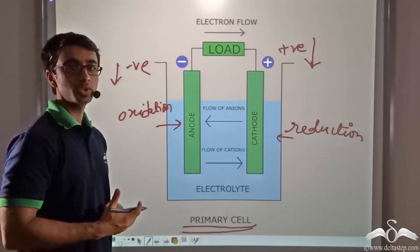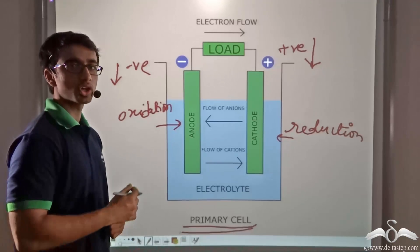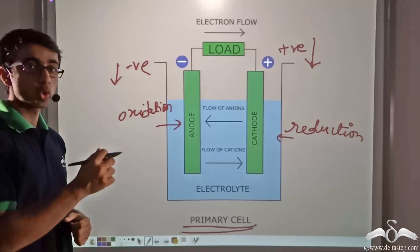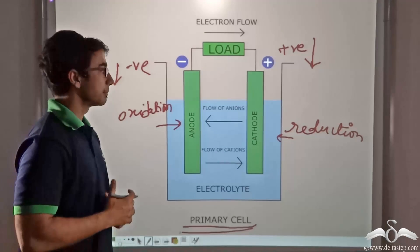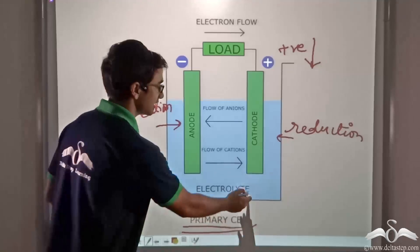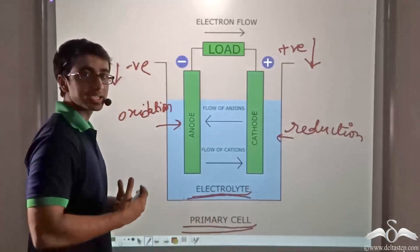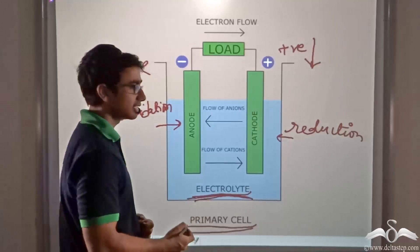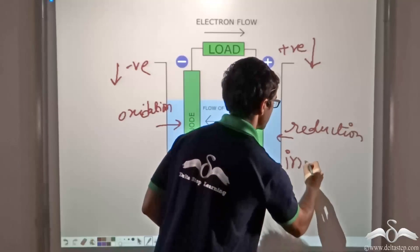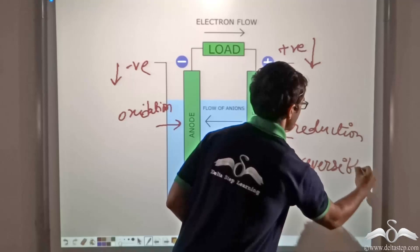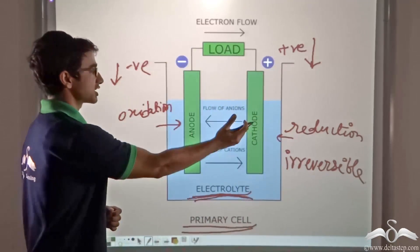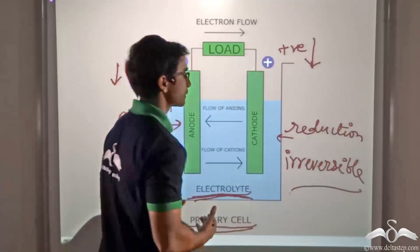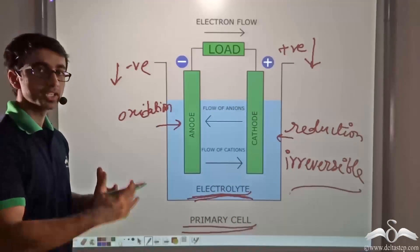Cells which are of the use-and-throw type are known as primary cells. Examples of primary cells can be found in TV remotes or torches, where after a certain period of time you have to throw away the cells or batteries because the reaction that takes place in the electrolyte no longer takes place. In the case of a primary cell, the reaction in the electrolyte is irreversible — that is, the oxidation-reduction at the anode and cathode cannot be reversed. So primary cells are of the use-and-throw type.